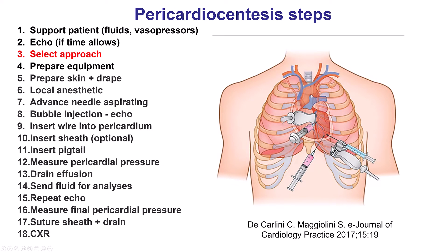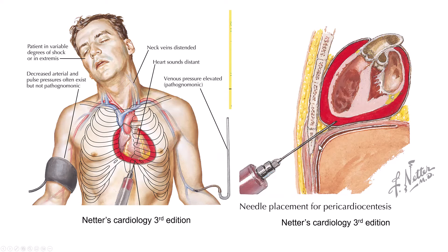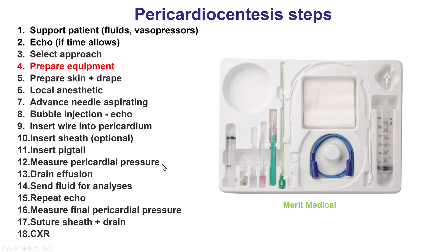Each approach has pluses and minuses. The subxiphoid is most commonly used, but the downside is that in bigger patients you may have to traverse a significant distance through tissue before reaching the pericardial space. The apical approach may be closer to the heart, but there is a risk of lacerating the intercostal arteries.